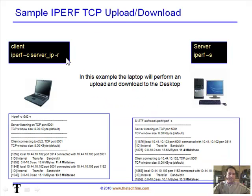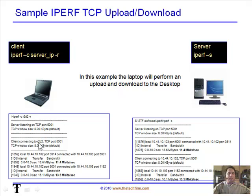In this example I did an upload and a download. The client has the same command as before but with a dash R added. An easy way to remember that is dash R means reverse — go up and then reverse and come back down. On the left side you'll see two numbers: 11.4 megabits per second for the upload and 13.5 megabits per second for the download, with similar numbers reflected on the server side.